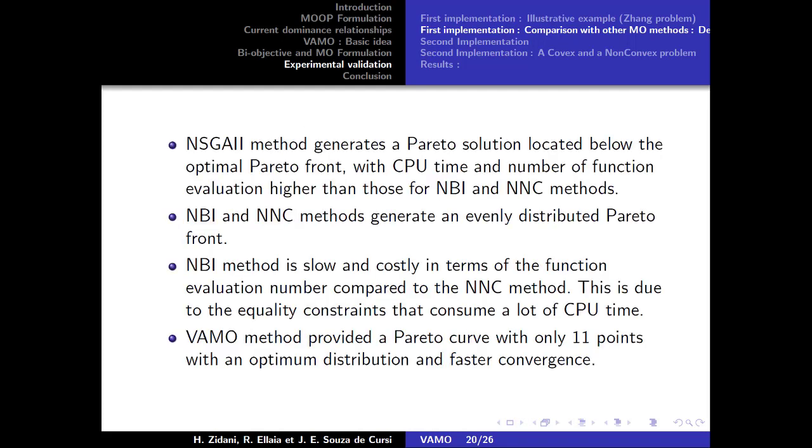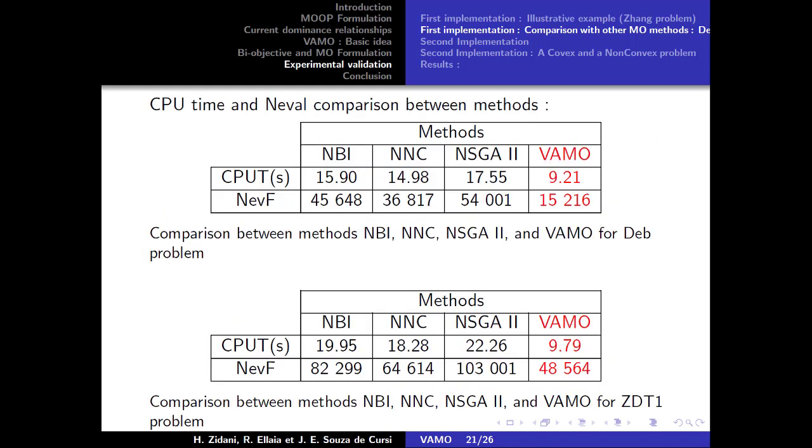The results are presented in terms of CPU time and the number of evaluation of the objective function. We observe that the NSGA2 method generates a Pareto solution located between the optimal Pareto front with CPU time and number of function evaluation higher than NBI method.